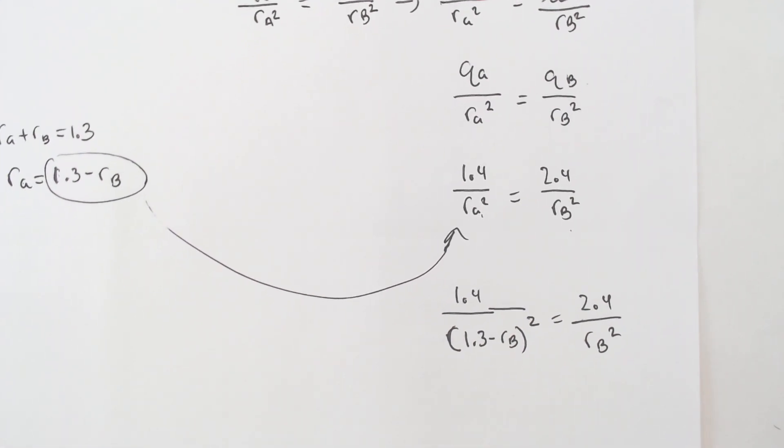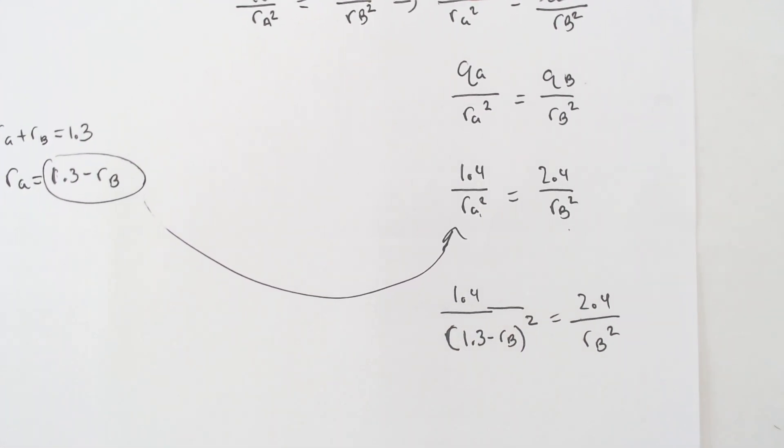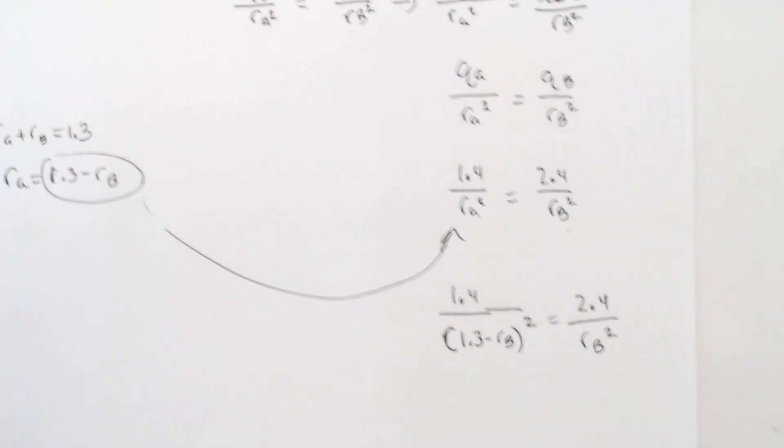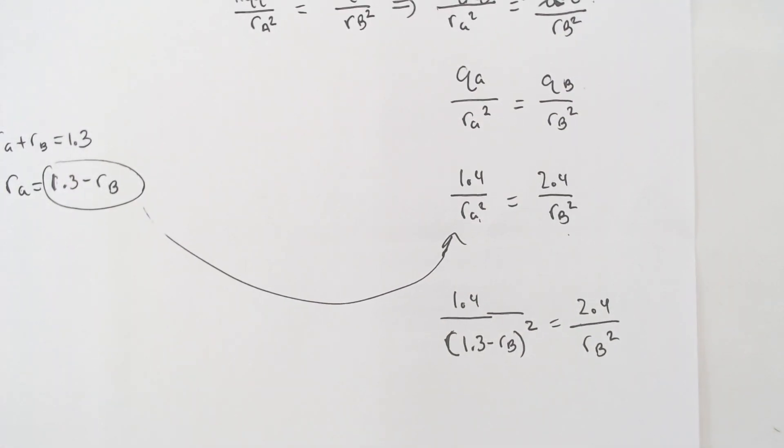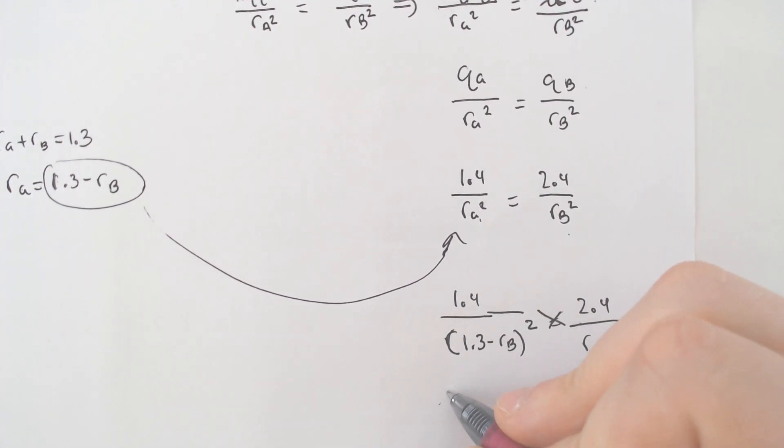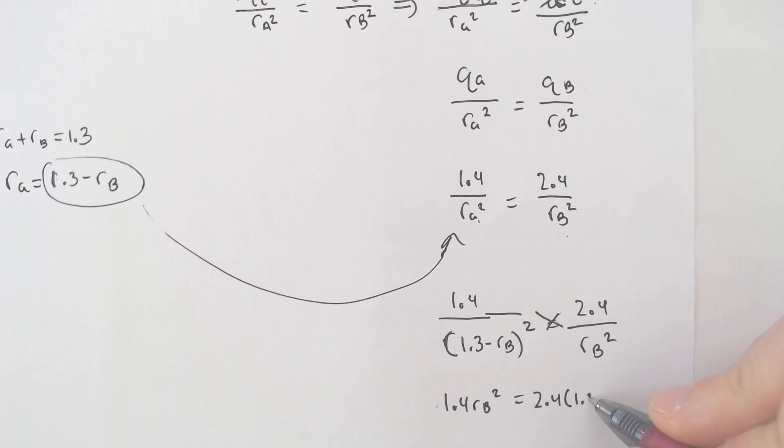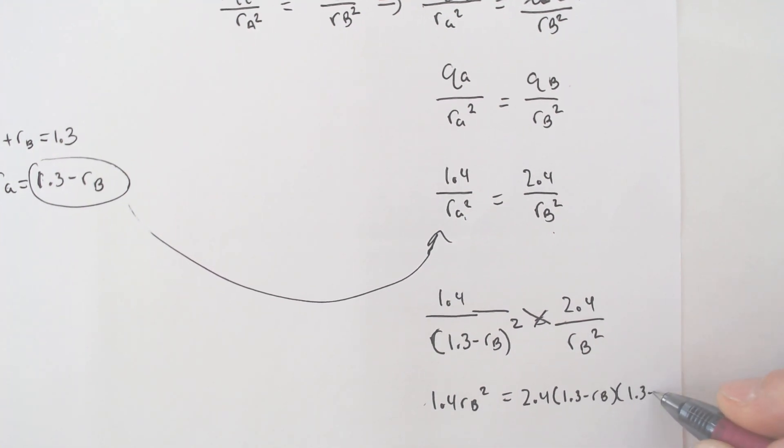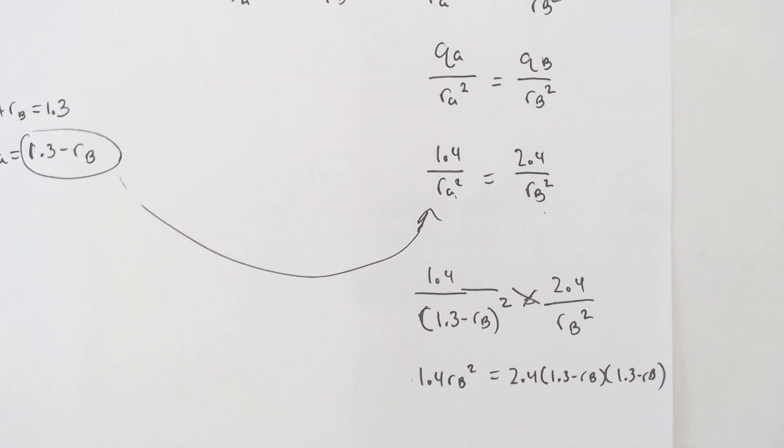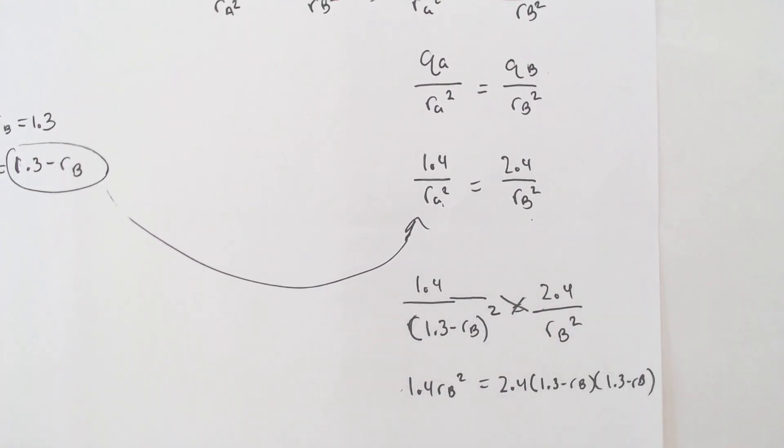Now the big thing that you got to do here is a lot of algebra. Hopefully you got a handy dandy graphing calculator and you can use the quadratic solver. But we are eventually going to cross multiply here. We get 1.4 radius of B squared would equal 2.4 times 1.3 minus radius of B and another 1.3 minus radius of B. Because this squared means that you have to foil those two.